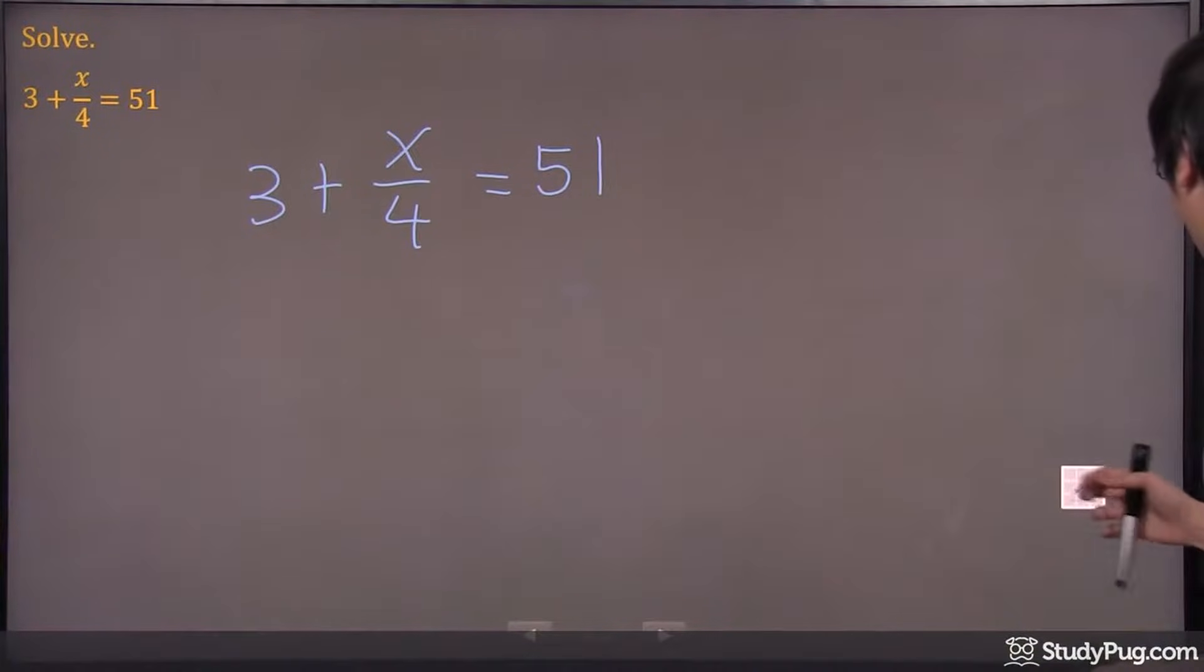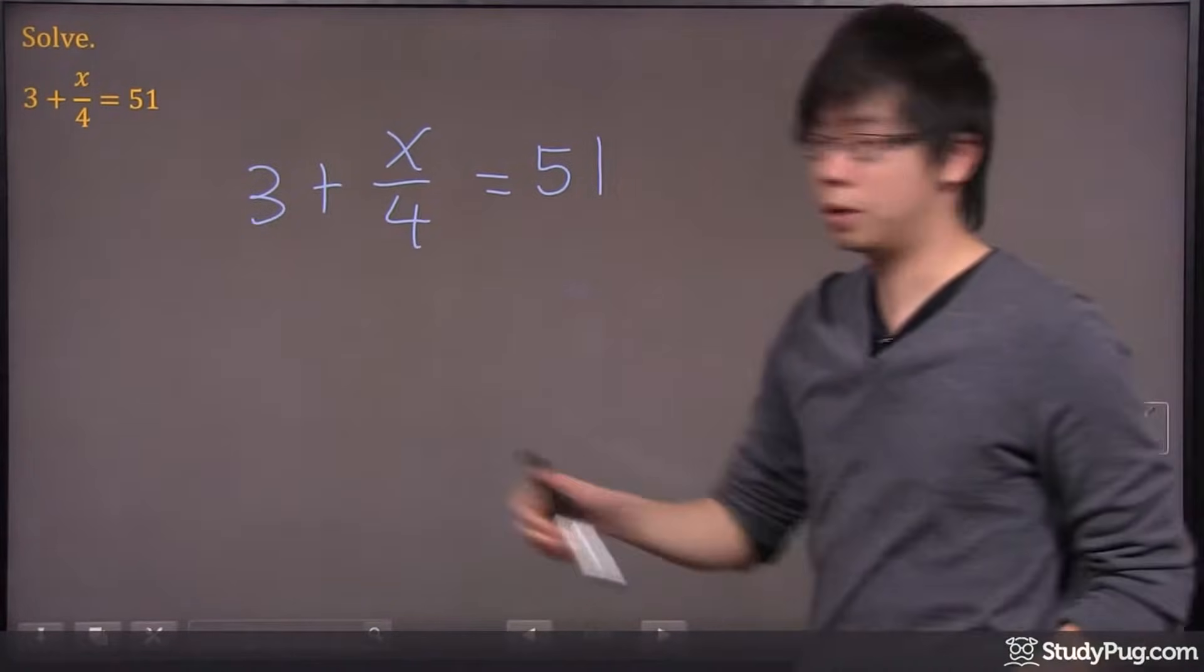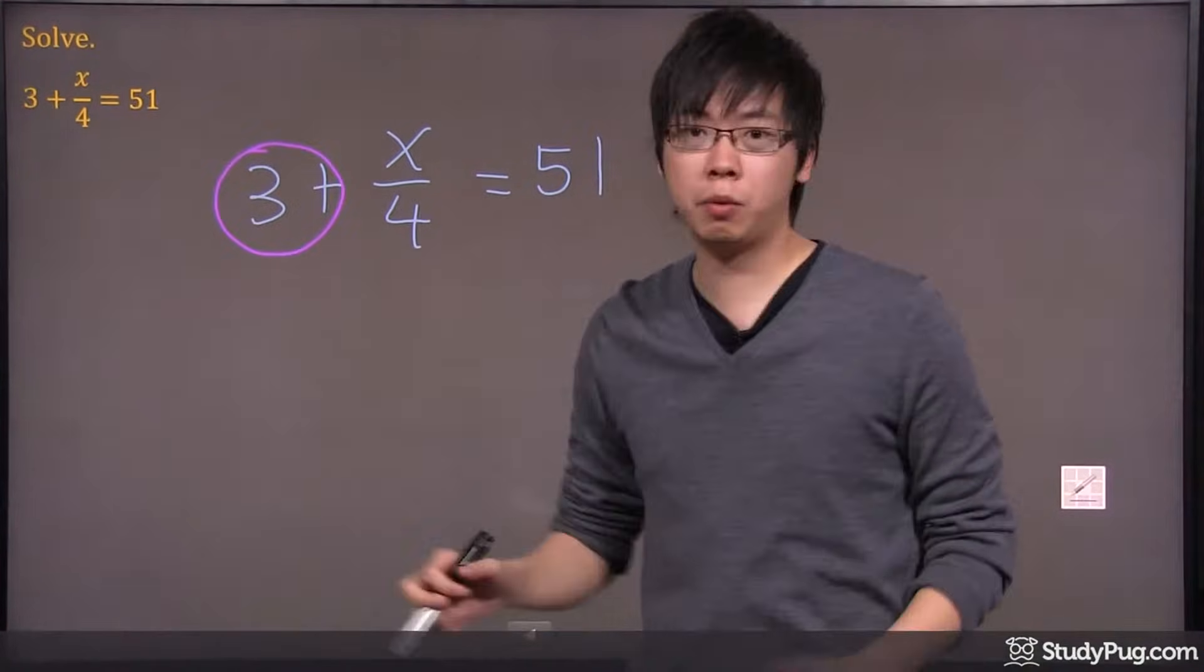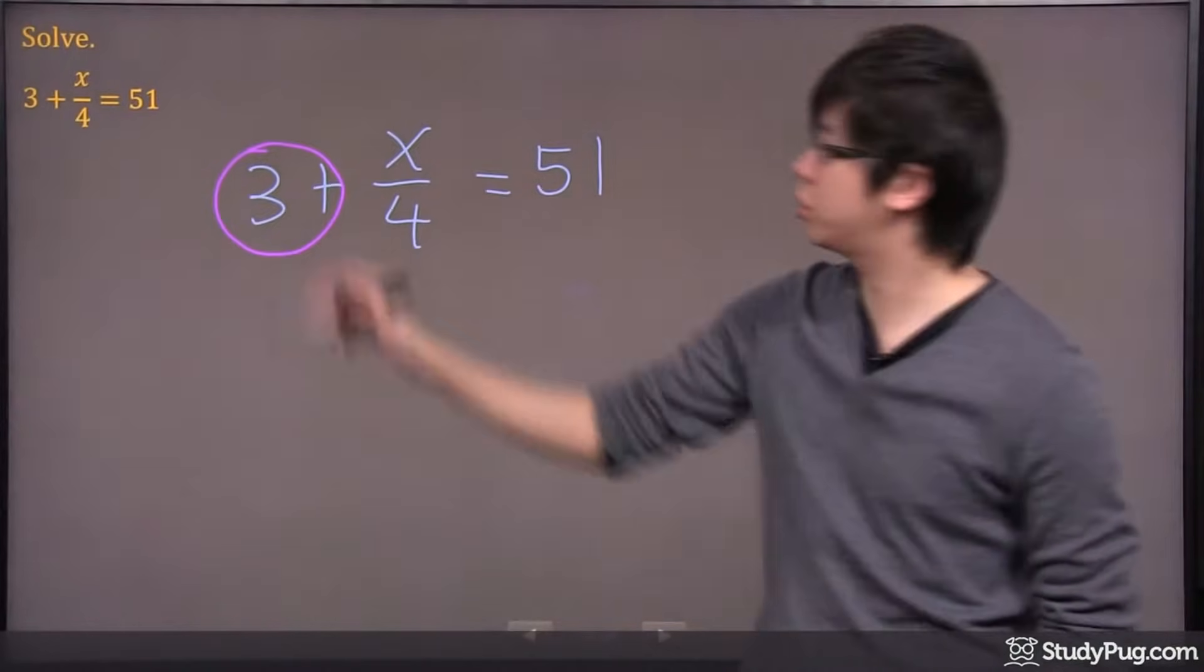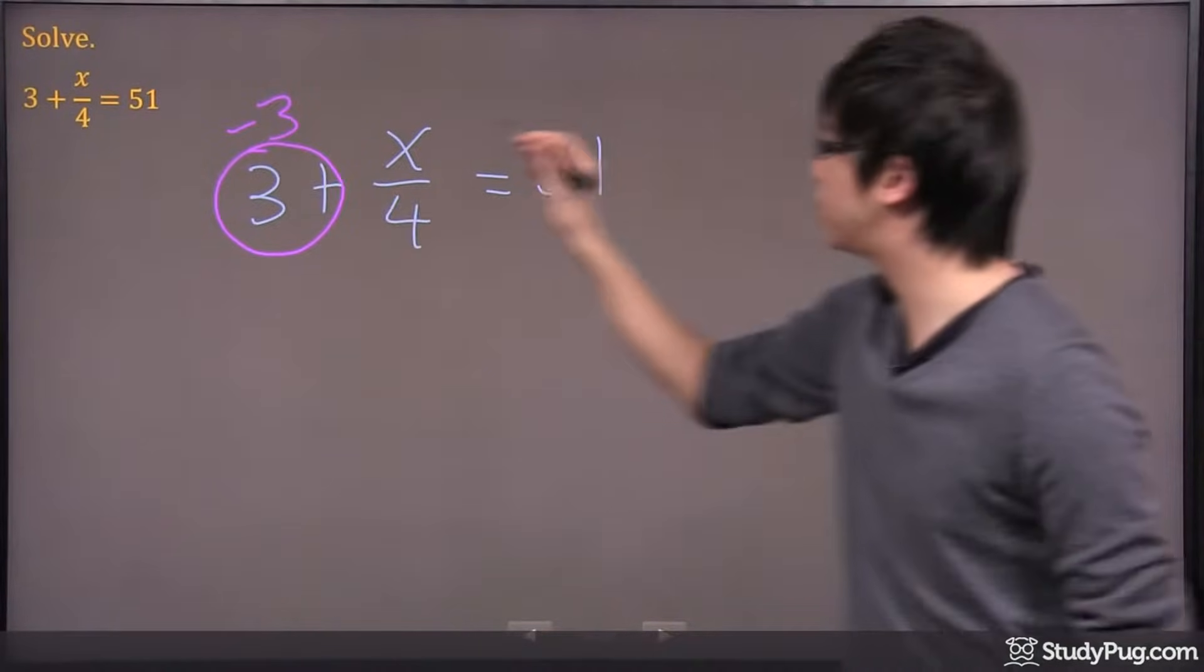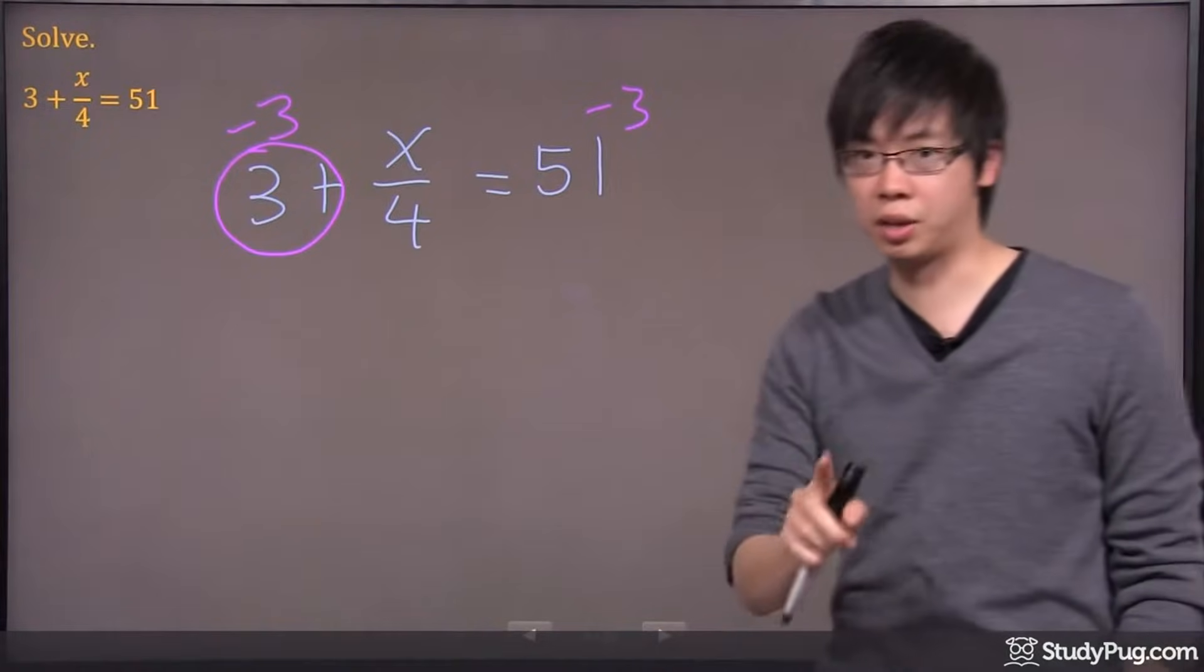So the first thing you do is you want to get rid of the 3. The 3 has to be removed. How do we do that? That's a positive 3, so to remove it we have to subtract 3 from both sides.